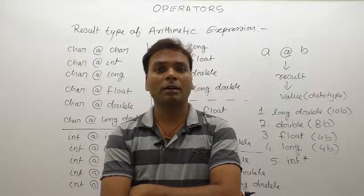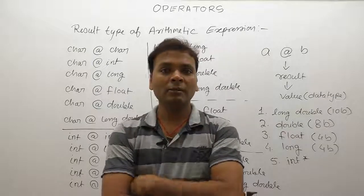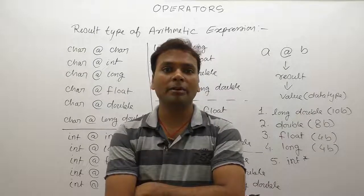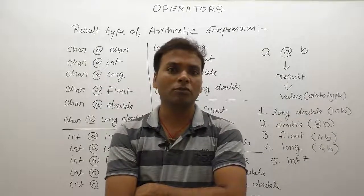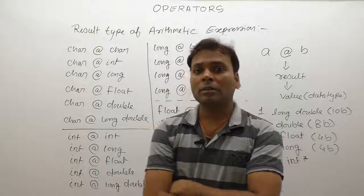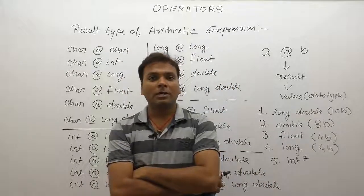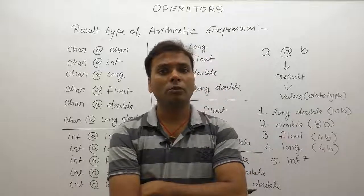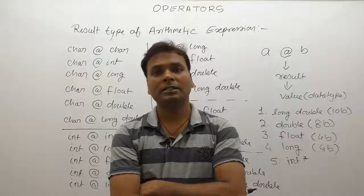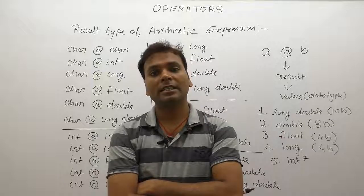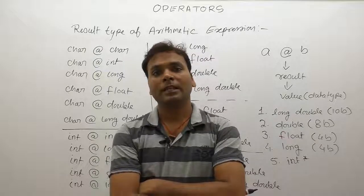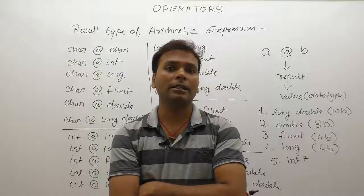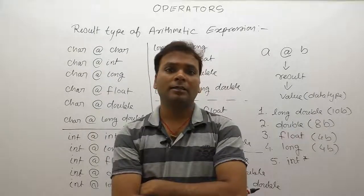If an expression contains any float operand, then the result is also float. But suppose neither long double is found, nor double, nor float — then at the fourth level we check for long types. If any expression has any operand that is long, then the result is also long. Finally, if none of these are found, by default all expressions are integer type.